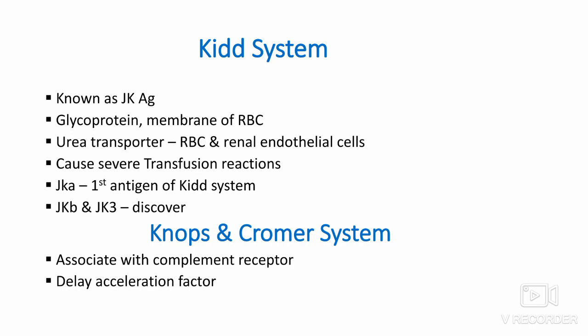Knobs and Cromer system: The Knobs blood group antigen is usually associated with complement receptors. The Cromer system has a decay acceleration factor.